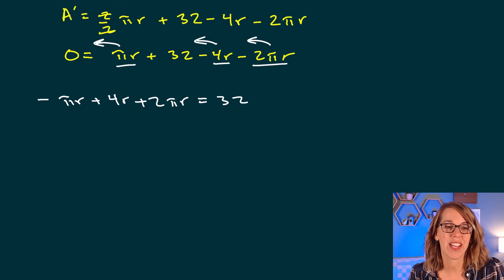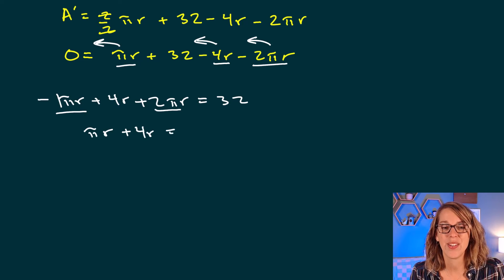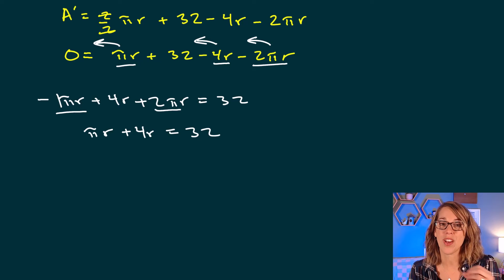Now I want to combine some like terms. I've got negative 1 pi r plus 2 pi r. If I combine these two terms, I end up with a pi r plus 4r is equal to 32. Now we're solving for r.